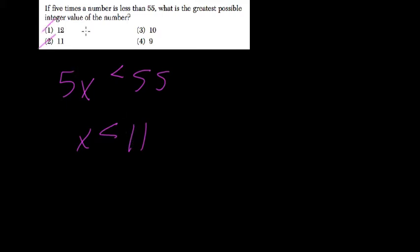So you can't pick 11 or 12, as it would not be less than 11. And what is the greatest possible integer? Remember, integers are whole numbers — positive or negative whole numbers, including 0. So here, 10 is the greatest integer less than 11.